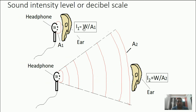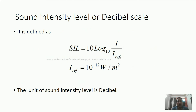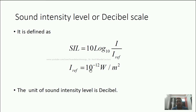Now, what is sound intensity level or decibel scale? It is also defined mathematically. It equals to 10 log base 10 of whatever the sound intensity is — for example I2 — divided by the reference intensity, which is 10 to the power minus 12 Watt per meter square. This is the reference intensity. Why is it taken as reference? Because at least this much sound intensity must be there so that we can detect that sound is developed. In case the intensity is less than 10 to the power minus 12 Watt per meter square, our ear cannot detect the sound. So this is what is called the decibel scale or sound intensity level. This is the definition of decibel.